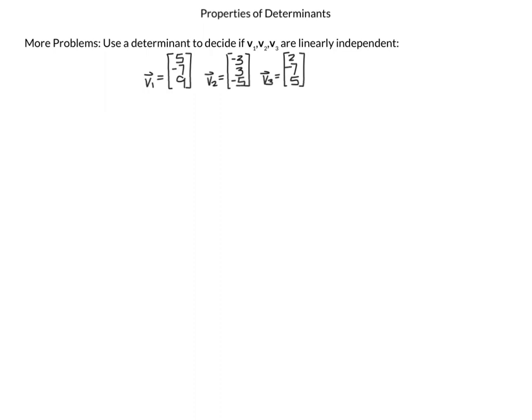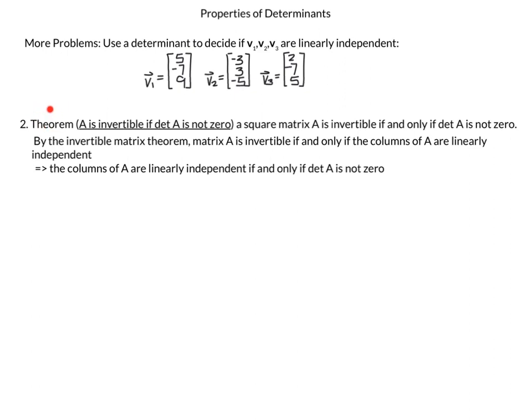The next problem is to use a determinant to decide if vectors v1 = (5, −7, 9), v2 = (−3, 3, −5), and v3 = (2, −7, 5) are linearly independent. The strategy uses two theorems: A is invertible if det(A) ≠ 0, and by the invertible matrix theorem, A is invertible if and only if the columns are linearly independent. Therefore, the columns are linearly independent if and only if det(A) ≠ 0.